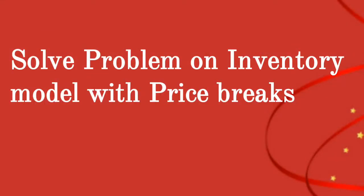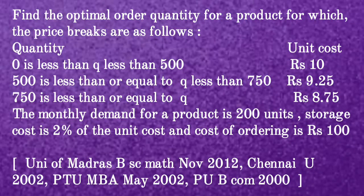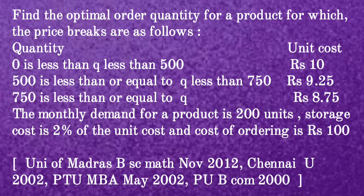Solve a problem on Inventory Models with Price Breaks. The given question asks to find the optimal order quantity for a product for which the price breaks are as follows: Quantity 0 < Q < 500 at unit cost Rs.10; Quantity 500 ≤ Q < 750 at unit cost Rs.9.25; Quantity Q ≥ 750 at unit cost Rs.8.75. This question was asked in University of Madras B.Sc Math November 2012, Chennai University 2002, PTU MBA May 2002, and PU B.Com 2000.